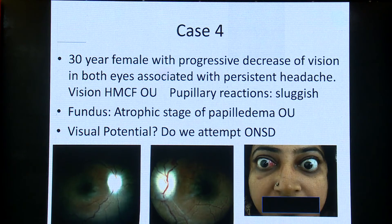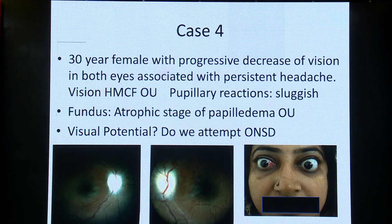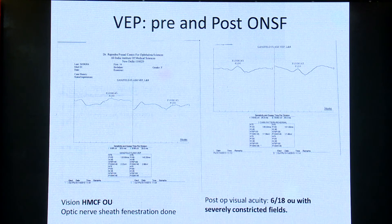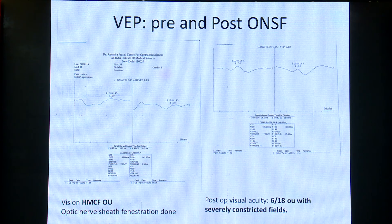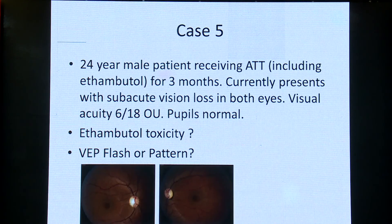A 30-year-old female with progressive loss of vision diagnosed as atrophic papilledema had very poor vision — hand movements. The neurologists were pressing for optic nerve fenestration; we were not very keen because we didn't feel the outcomes would be very good. But the VEP showed some waveforms and, being a young female, we were aggressive in operating. We operated and over time the waveforms are now better — she was actually 6/60 in both eyes. So VEP can help tell us that there was some visual function which we could help restore.